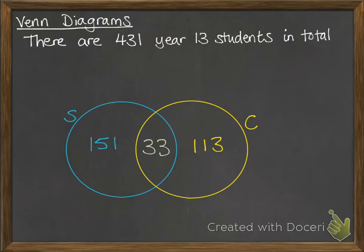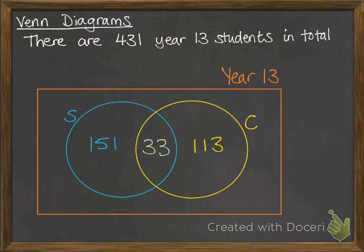Okay, we can add some more information to this diagram if we're told about the total that these students were selected from. So there are 431 year 13 students in total. And we can add this as a rectangle. Now a rectangle identifies the complete set that these were drawn from. So all year 13 that these students could be selected from, and they have a total of 431.